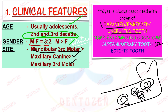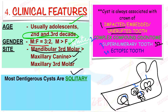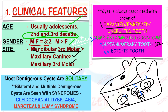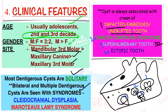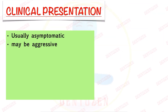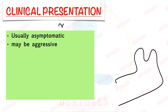It can be associated with an impacted, unerupted, or embedded tooth, or with a complex/compound odontoma, supernumerary tooth, or ectopic tooth. Usually it is solitary, but it can be bilateral or multiple. Bilateral and multiple dentigerous cysts are seen in two syndromes: cleidocranial dysplasia and Maroteaux-Lamy syndrome — that is your five-hour entrance question.